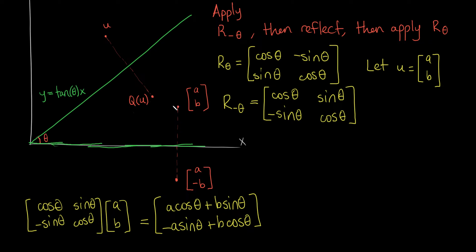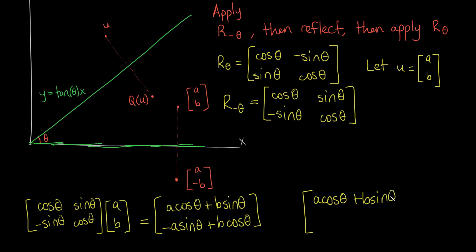This is the rotated point, but this isn't the reflection yet, so we have to do our next step, which is to actually reflect it. Luckily, since we just rotated it, the reflection is easy. The reflected version keeps the x-coordinate the same — reflecting across the x-axis does not affect the x-coordinate — and makes the y-coordinate negative. So it becomes: [a·cos(θ) + b·sin(θ), a·sin(θ) − b·cos(θ)].